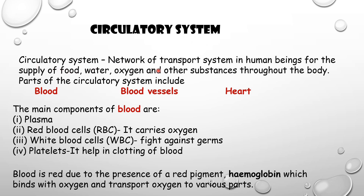The circulatory system is a network of transport systems in human beings for the supply of food, water, oxygen, and other substances throughout the body. These essential substances are transported throughout our body through a system called the circulatory system. The important parts of that system are blood, blood vessels, and heart.